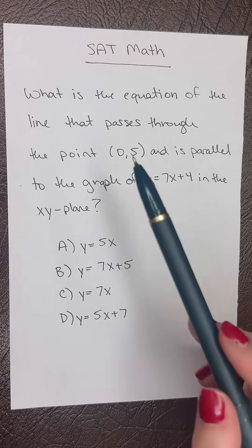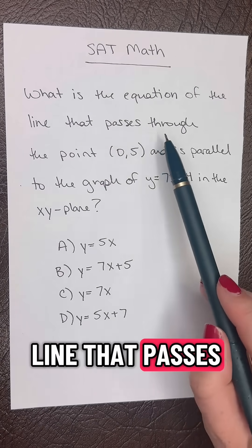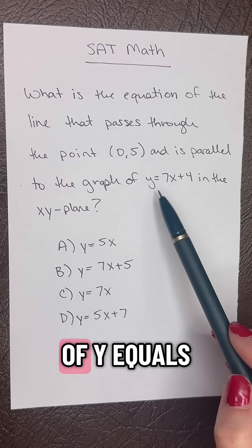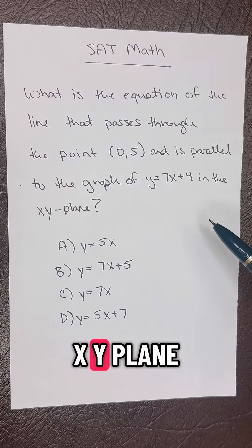SAT math question of the day. What is the equation of the line that passes through the point (0,5) and is parallel to the graph of y = 7x + 4 in the xy-plane?